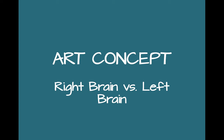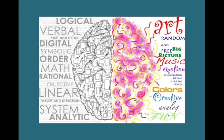Today for our observational drawing unit we're going to be talking about the concept of the right brain versus the left brain. In the 1960s, scientists proved that two parts of our brain control many different aspects of how we understand things. We have the right side of the brain and the left side of the brain — the right hemisphere and the left hemisphere. It has been proven that different sides of the brain control different aspects of our body.